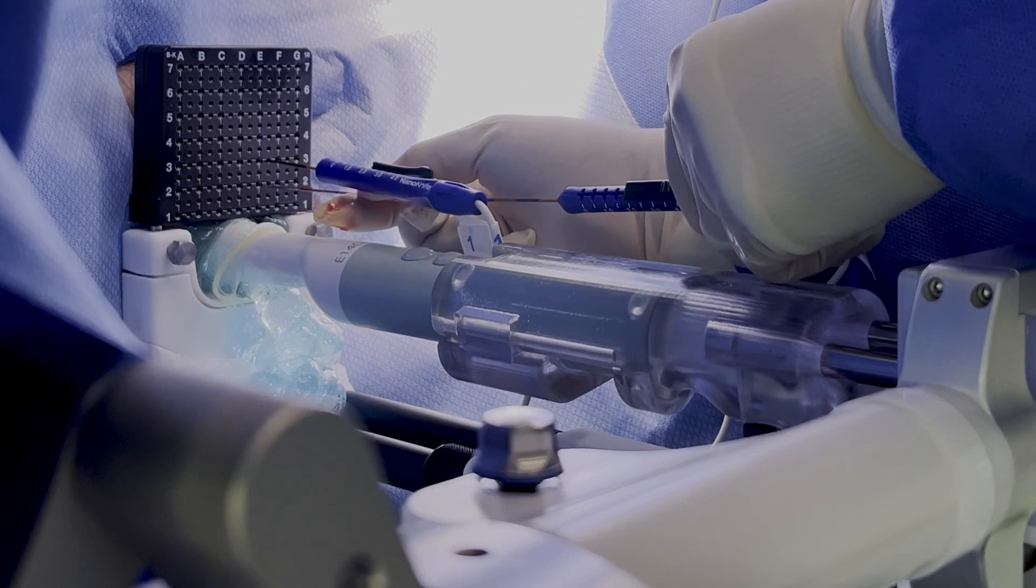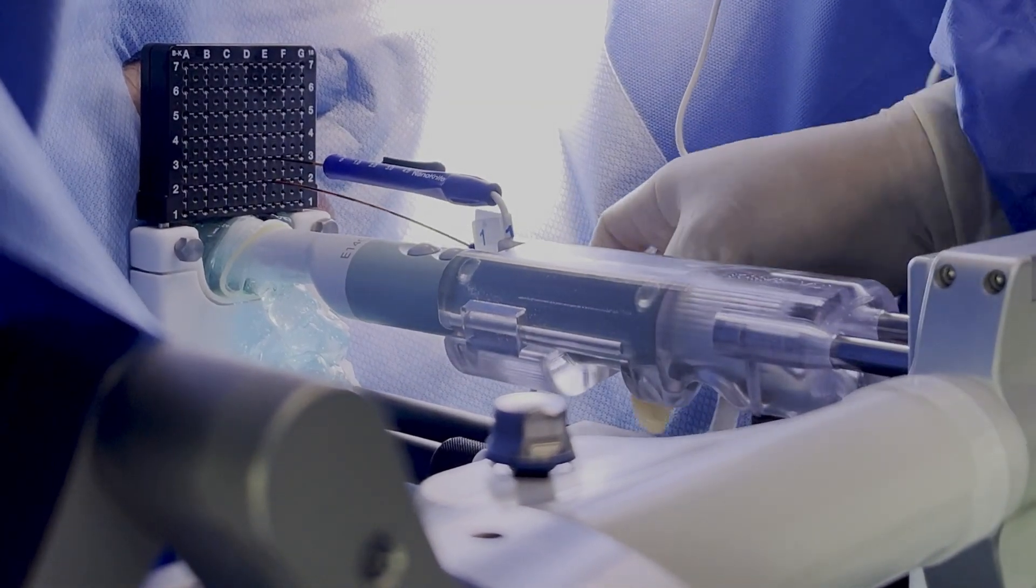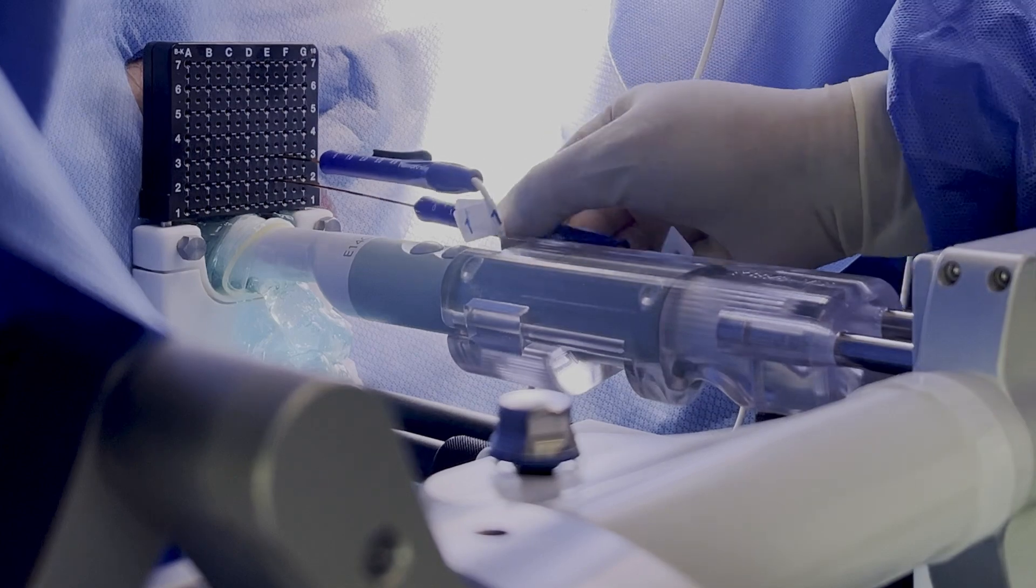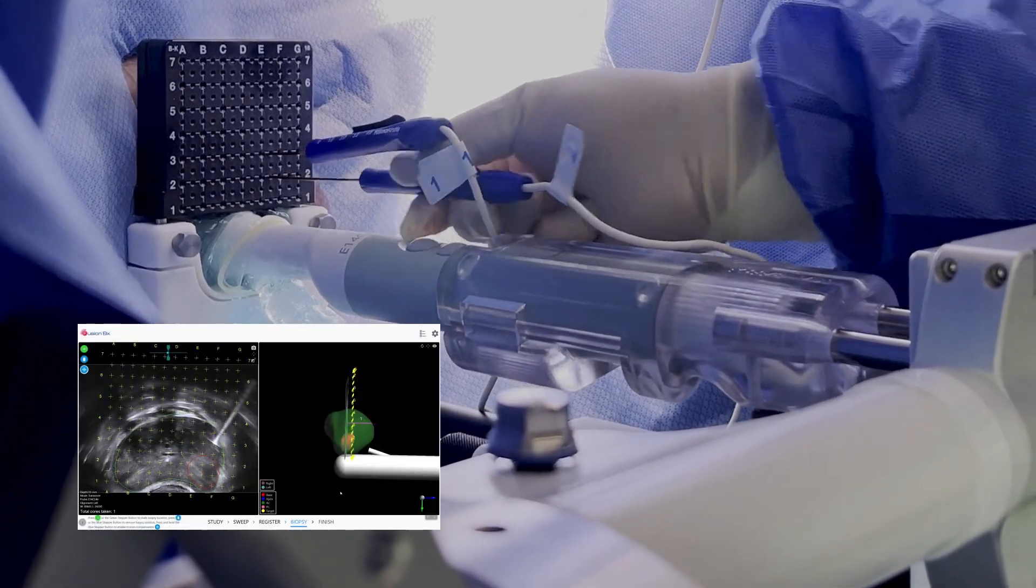The semi-robotic arm stabilizes the probe for hands-free operation, while the 3D model is designed to help urologists accurately and consistently place multiple nano knife electrodes around target lesions.